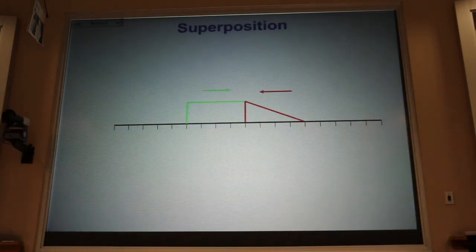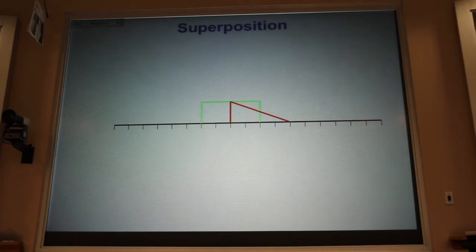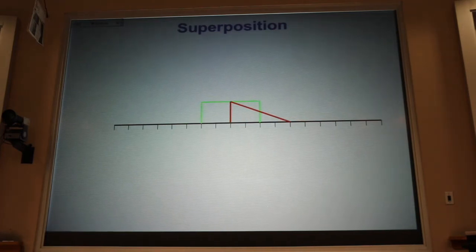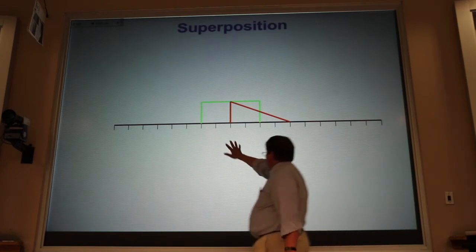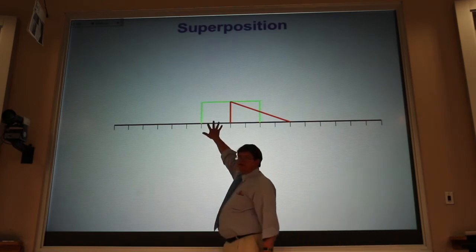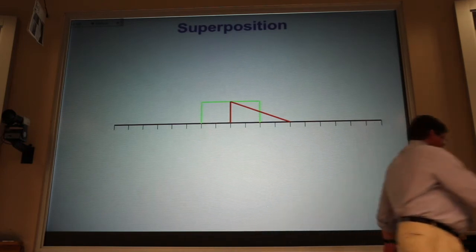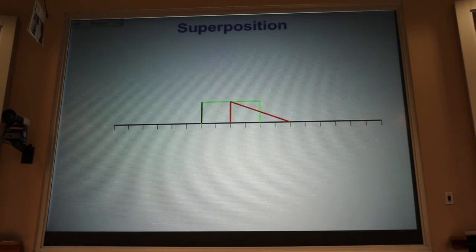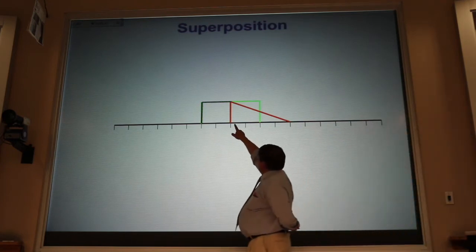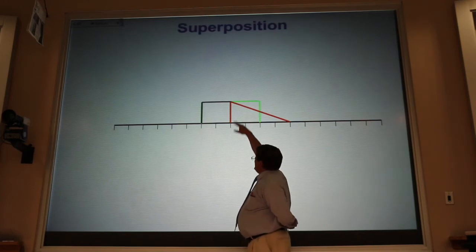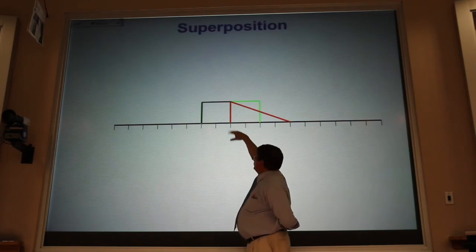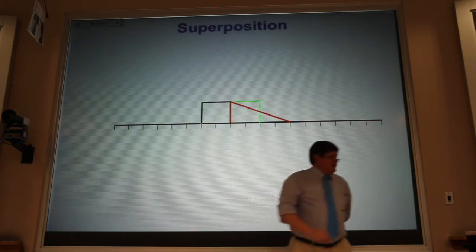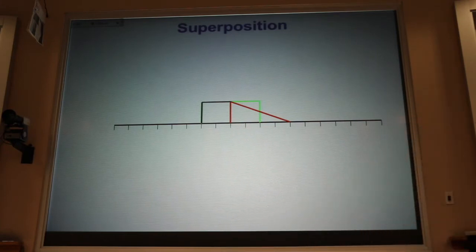Now, once they overlap, I add them up. Over here, all I've got is green, and so that's what the spring or string will look like. But right here, if I call that one unit up, I've got one unit of red up and one unit of green up. And so that's going to give me a total of two up.